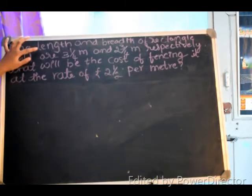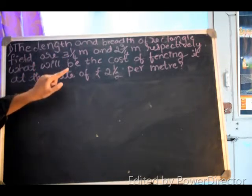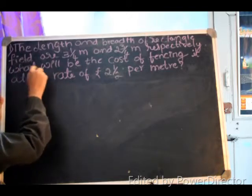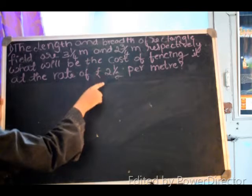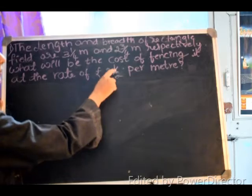Friends, don't get confused. The length is 3 1/4 meter and breadth is 2 3/4 meter. We have to find what will be the cost of fencing it at the rate of 2 1/2 per meter.